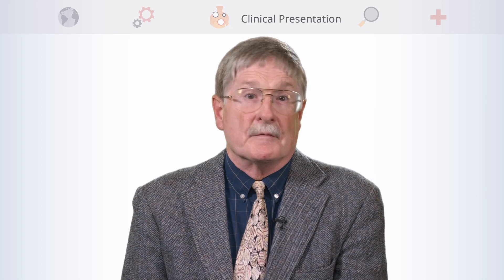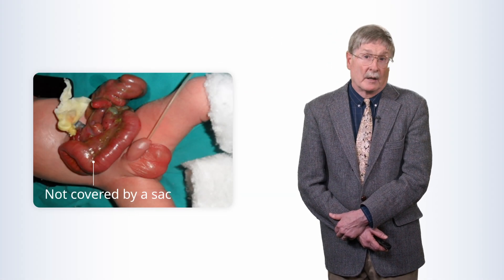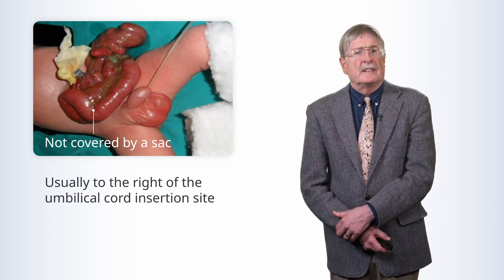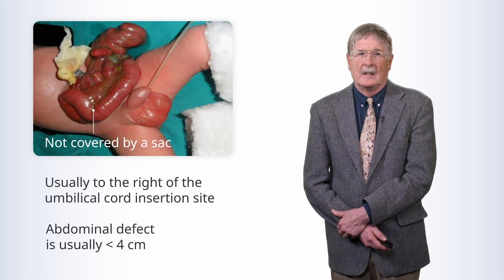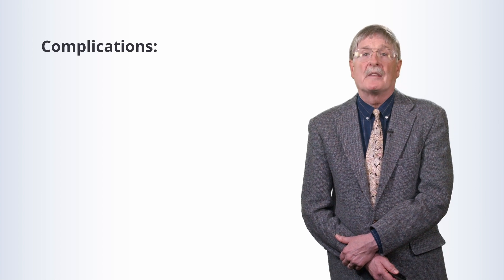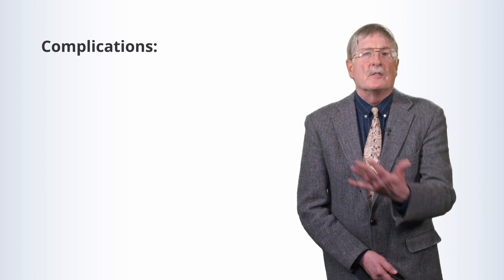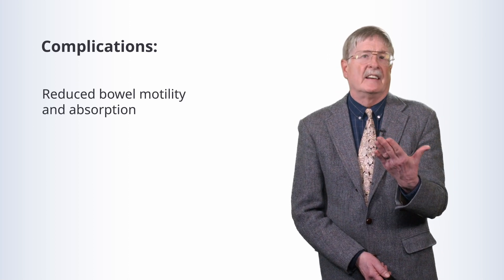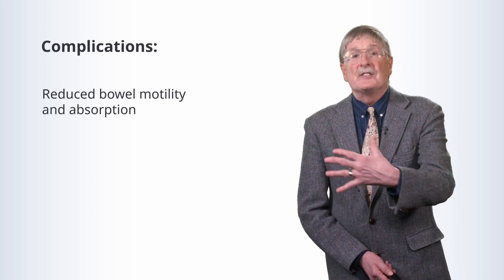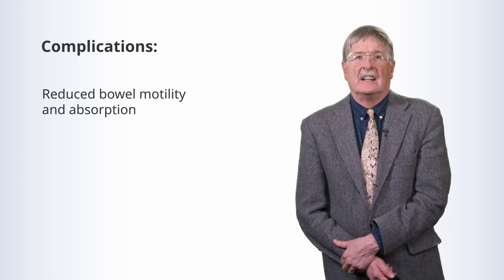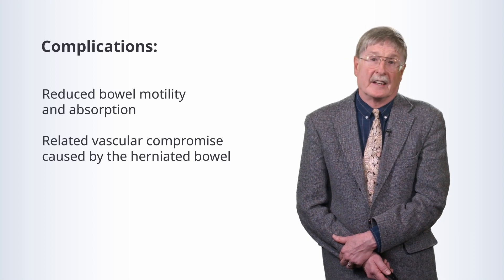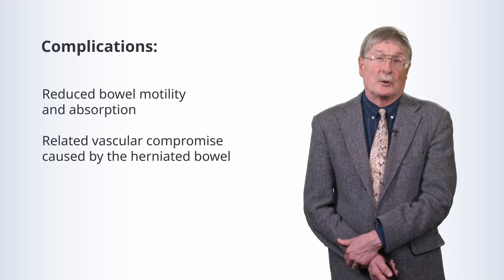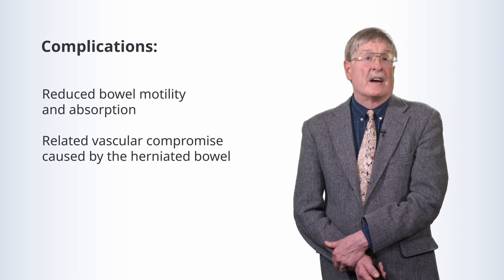For clinical presentation, it's not subtle in most cases. There is a peri-umbilical abdominal wall defect, usually to the right side of the umbilical cord insertion site, with no membrane covering it. The defect is usually less than four centimeters. With the bowel outside the abdominal wall during development, there is reduced bowel motility and reduced bowel absorption due to the unprotected intestine being exposed to irritating amniotic fluid. Intestinal atresia is seen in about 5% to 25% of newborns with gastroschisis.